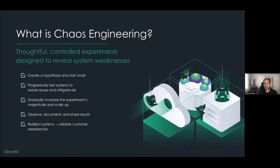We've talked about what reliability and resiliency are, what serverless is, and the challenges of making serverless reliable and why reliability is so important. Next, let's dive into how you can actually test, validate, and improve reliability. We're going to cover a method called chaos engineering. The idea behind chaos engineering is that it's a practice of thoughtful, controlled experiments designed to reveal weaknesses or failure modes in our systems.